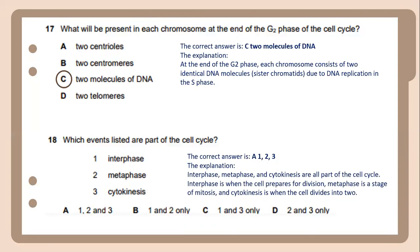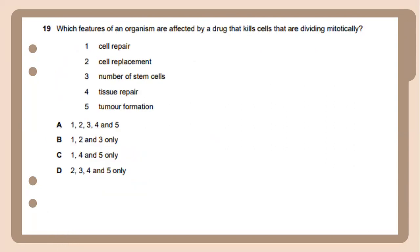Interphase, metaphase, and cytokinesis are all part of the cell cycle. Interphase is when the cell prepares for division. Metaphase is a stage of mitosis. And cytokinesis is when the cell divides into two. The answer will be 1, 2, and 3.